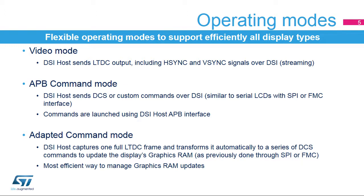APB command mode sends commands over the high-speed link for configuration, as is done using a legacy serial interface such as SPI or FMC. The commands are launched using the DSI Host APB interface.